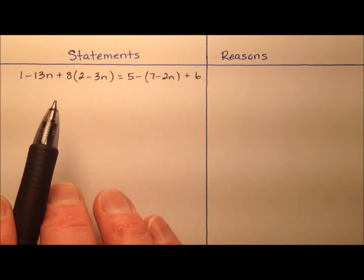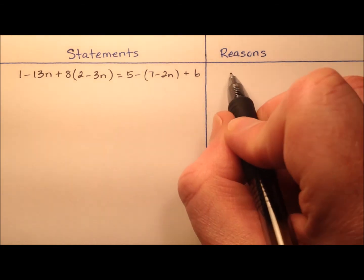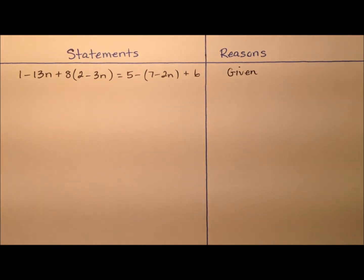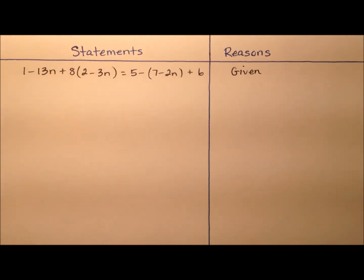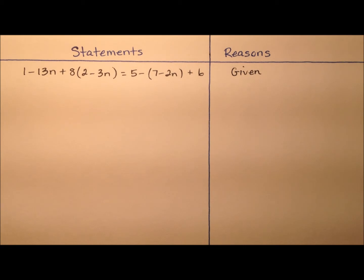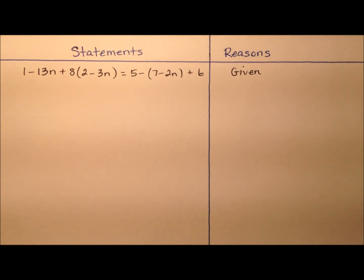What are some of the reasons we're going to use? The first one is probably the easiest — the equation has been given to us, so we write 'given.' We also have parentheses, so we can distribute and then simplify expressions that are equal to each other. The big ones are the properties of equality: addition, subtraction, multiplication, and division. These state that when you add one value to one side of an equation, you must do it to the other side for the equation to stay equal. After using a property of equality, we'll be simplifying.